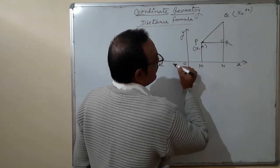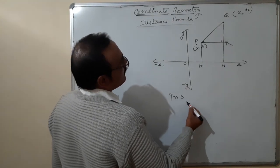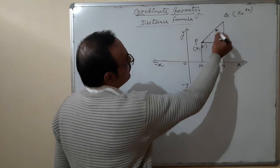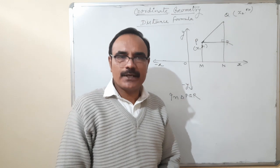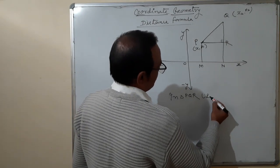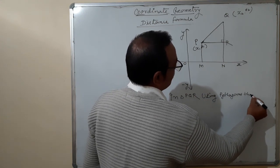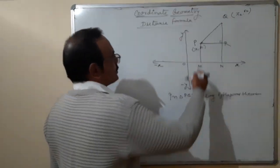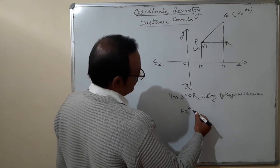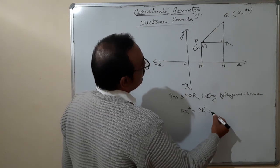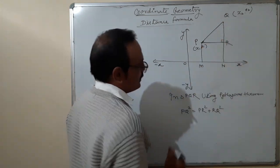What I have done: draw perpendicular PM on the x-axis, QN on the x-axis, and draw one perpendicular through point P to QN — that is R. This is 90 degrees, a perpendicular parallel to the x-axis. In triangle PQR, since the triangle PQR is a right-angle triangle with one angle of 90 degrees, we can use the Pythagorean theorem. PQ squared is equal to PR squared plus RQ squared.